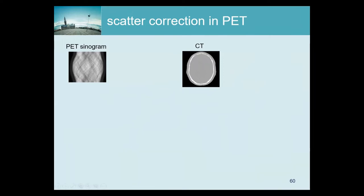For scatter correction in PET, people first tried to use energy-based scatter correction, but it didn't work very well. At that time, that was with BGO and poor energy resolution. It could be that now, with the much better energy resolution we have in our PET scanners, energy-based methods might work, but I don't think many people are trying because we have established scatter correction methods that are based on scatter simulation.